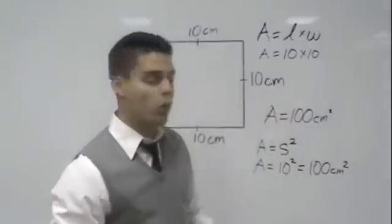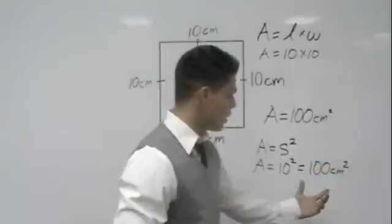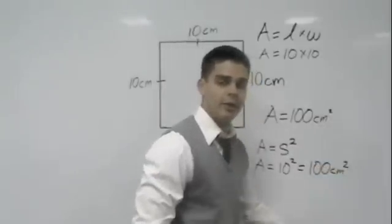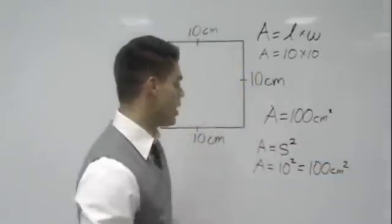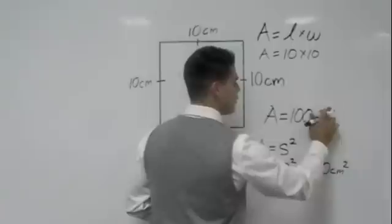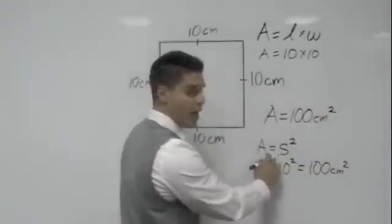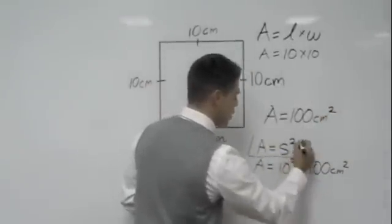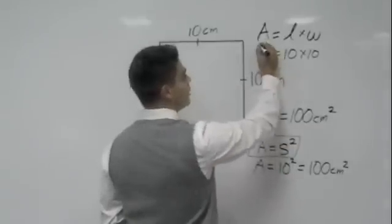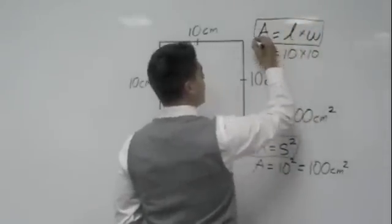Now area is always squared, guys. Whenever you write it, it should be centimeters squared, feet squared, and so on. Okay, so again remember that the formula should say area equals S squared, or you can also stick to area equals length times width.